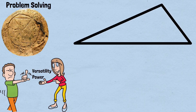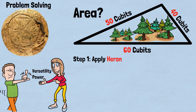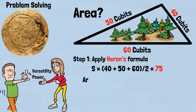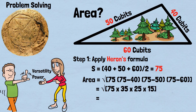A Babylonian farmer owns a triangular field with sides measuring 40, 50, and 60 cubits. What's the area? Applying Heron's formula: s = (40+50+60)/2 = 75. Area = √(75 × 35 × 25 × 15) = √984,375.